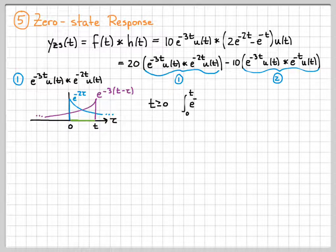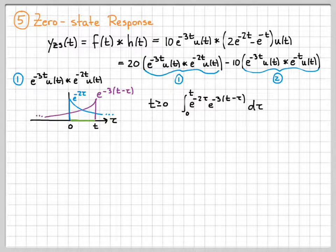So for t greater than or equal to zero, the integral that I need to work adds up the area underneath the product of these two pieces. So it's going to be an integral from zero to t. The first signal, e to the minus 2t, times the second signal, e to the minus three, t minus tau.